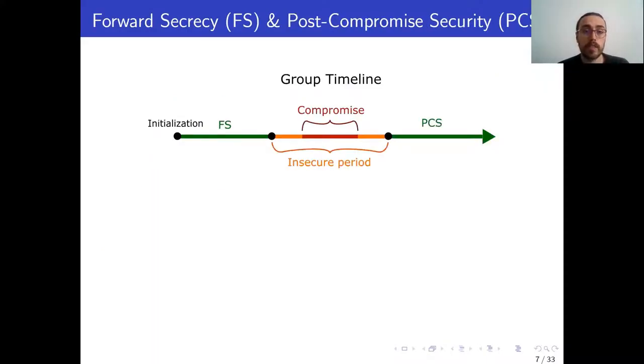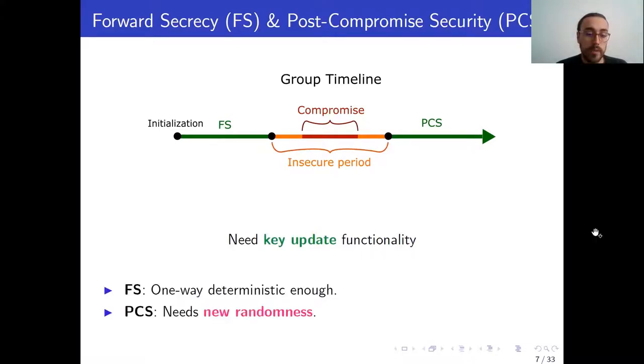So let me take just a second to recall what these two notions are. So if we imagine a group timeline from its initialization, and we suppose there is some compromise window in the middle where the state of a user leaks, then forward secrecy would ensure that all the keys and messages up to some point in the past remain secure, whereas post-compromise security ensures that at some point in the future, after the end of the compromise, we will regain security. And of course, you can guess that both these notions need some form of key update functionality. However, the difference is that whereas for forward secrecy, one-way deterministic updates are enough, PCS needs new randomness infused.